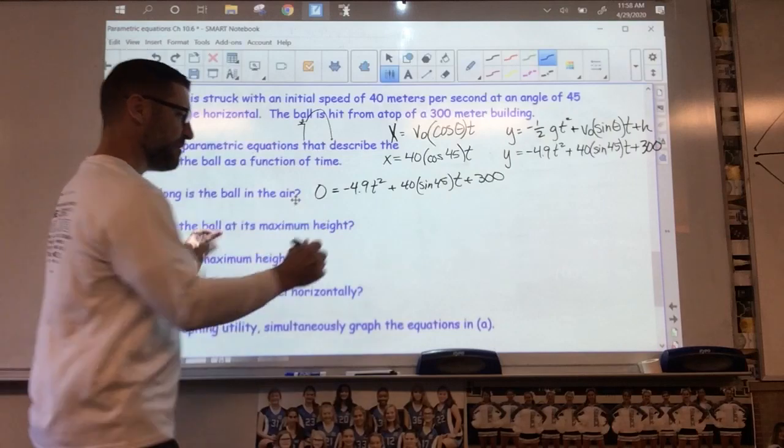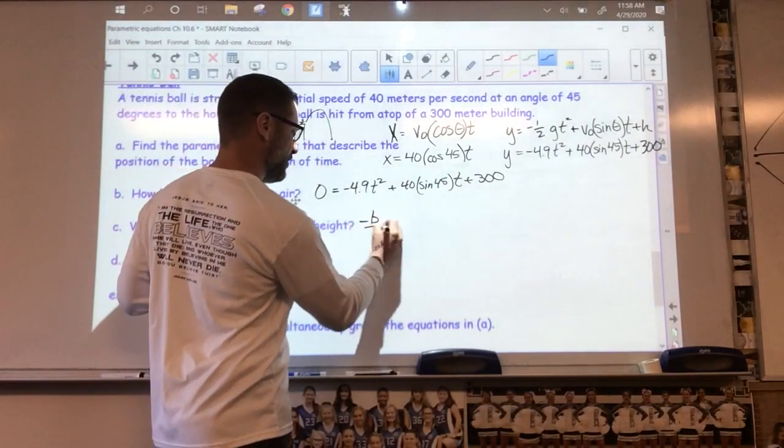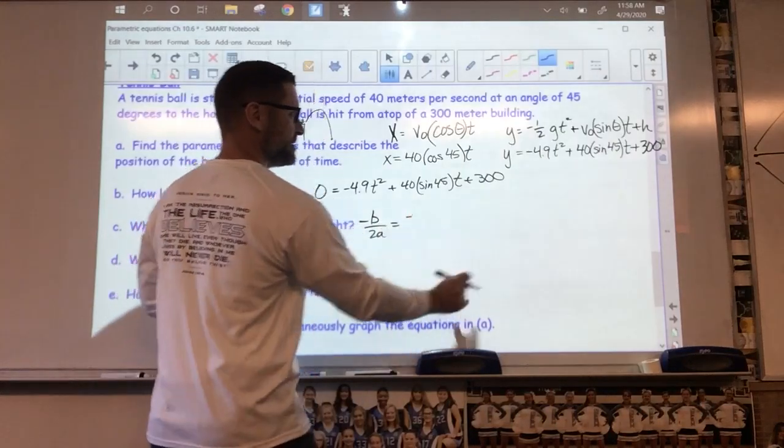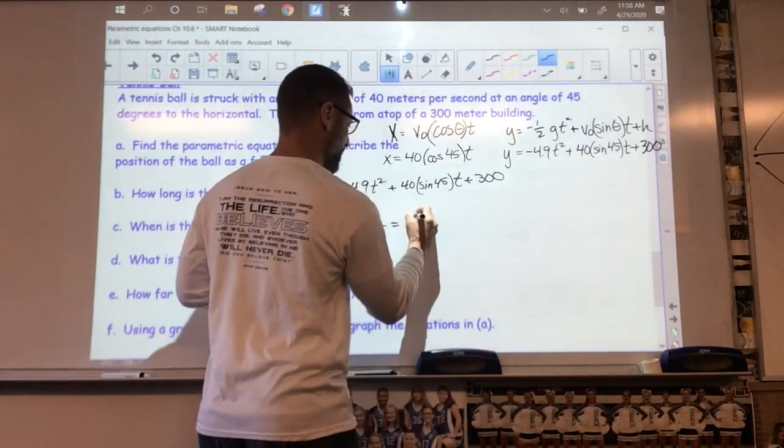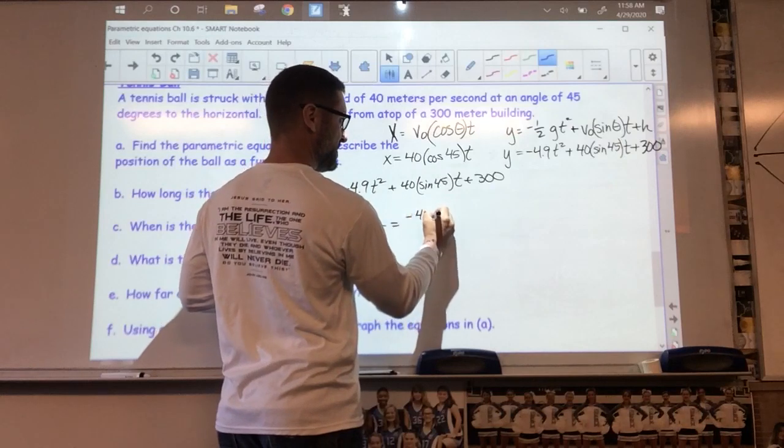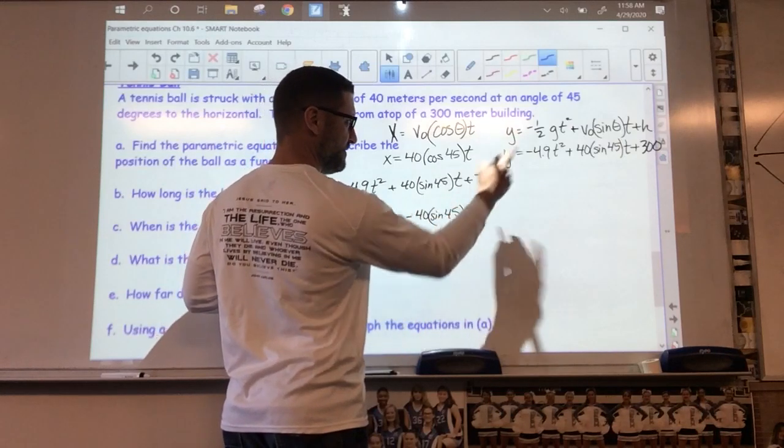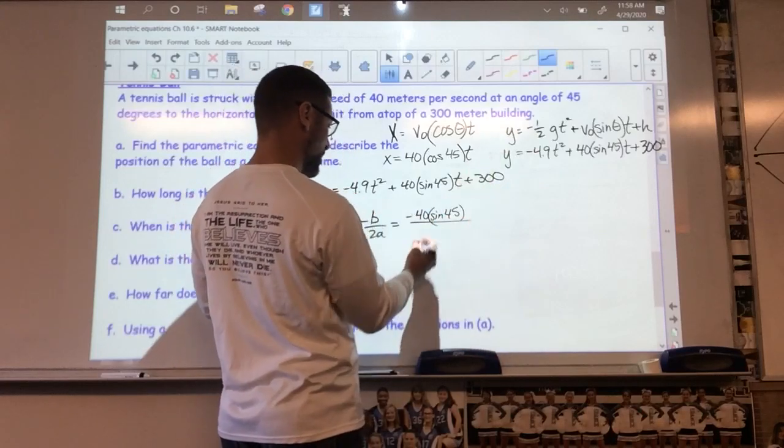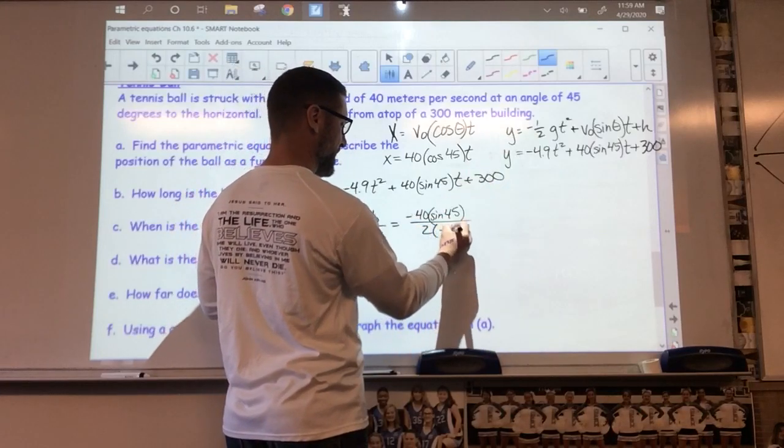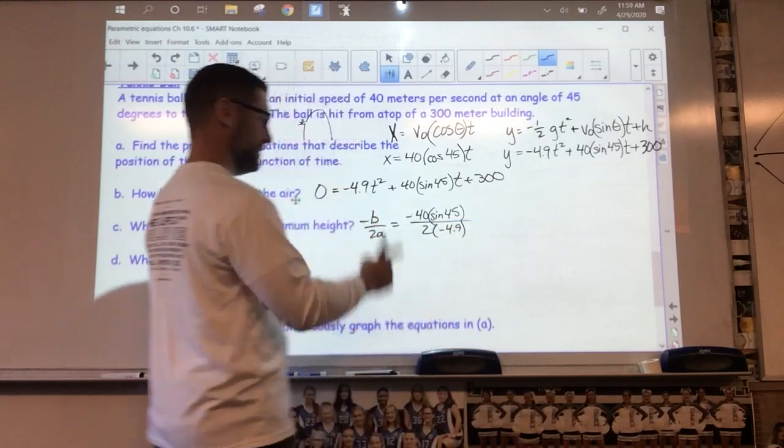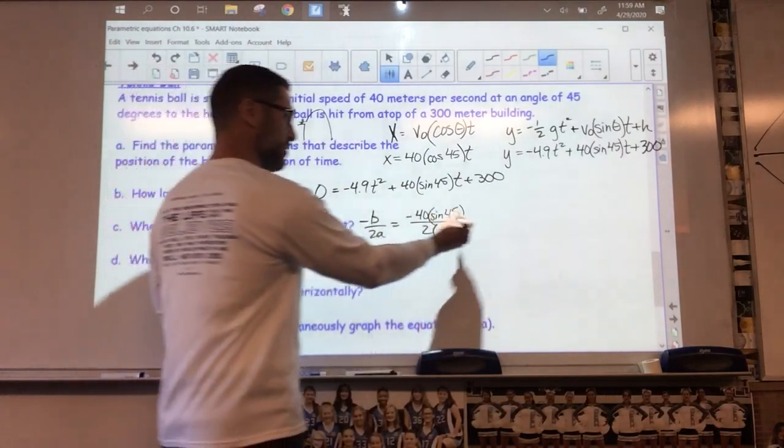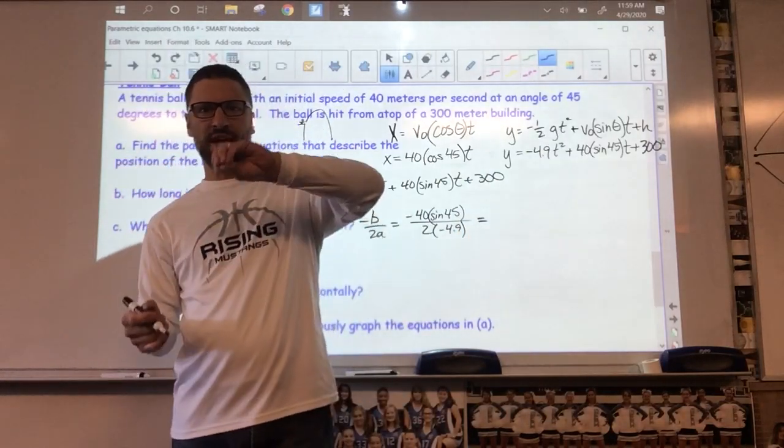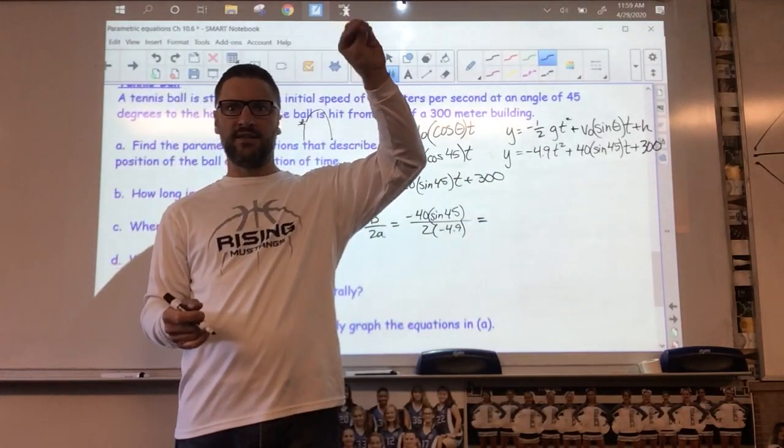When is the ball at its maximum height? Well, negative b over 2a. My b value is here, 40 sine of 45 times my t value. I don't need the t. There's negative b all over two times the a value, which is negative 4.9. Negative b over 2a. And you'll find a value out for that. Okay, that ball was hit off the top. That is when it hits the max height.